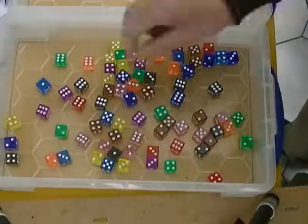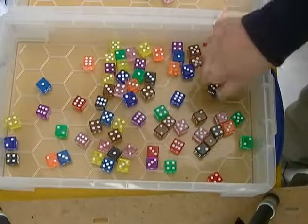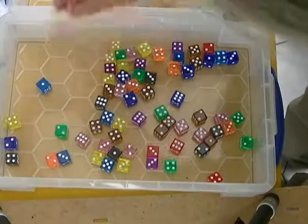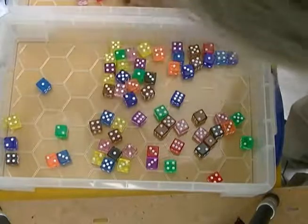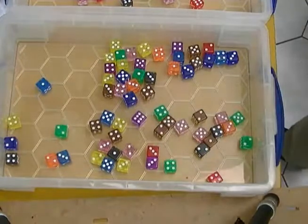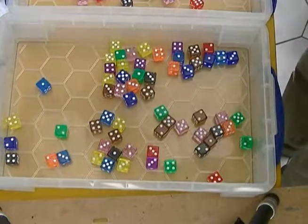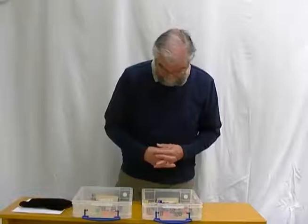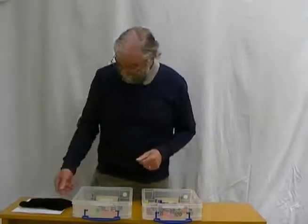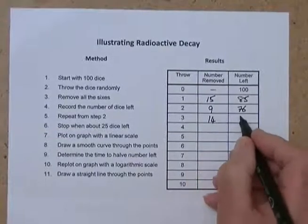See how many we've got this time. One, two, three, four, five, six, seven, eight, nine, ten, eleven, twelve, thirteen, fourteen. I think that's it — fourteen this time. You might say, well hang on, that's more than last time, but remember this is varying randomly. So fourteen is not an unreasonable number to get for one-sixth of the dice. So let's record another fourteen missing, which means now we've got sixty-two dice left.